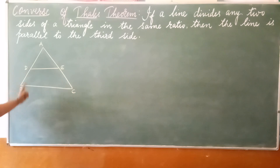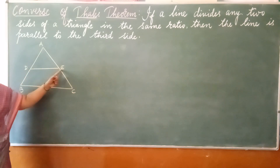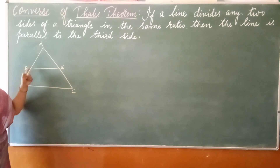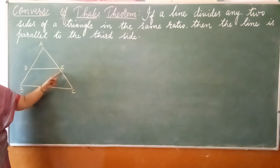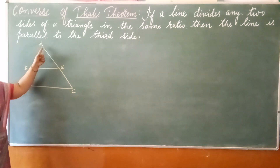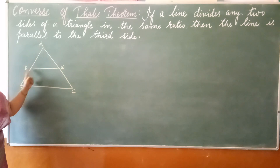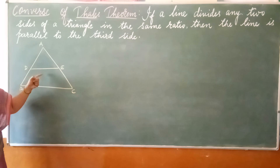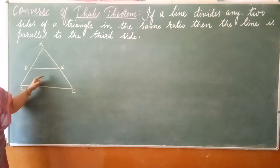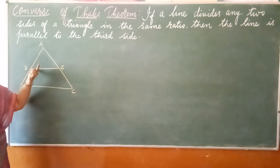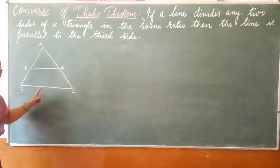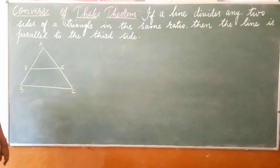It means to say that if a line is drawn such that it intersects AB at D and AC at E, in such a way that their ratios are equal — AD by BD is equal to AE by EC — then this line must be parallel to the third side. This is the converse of Thales theorem.